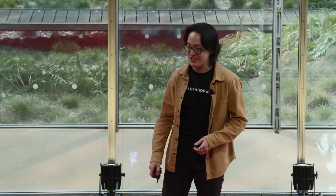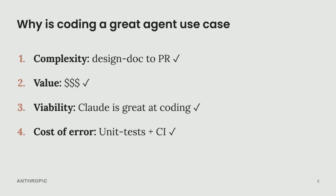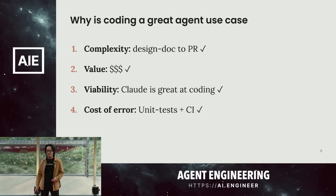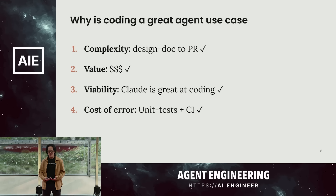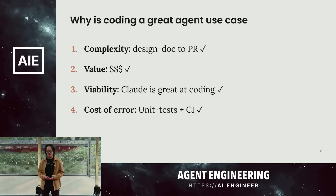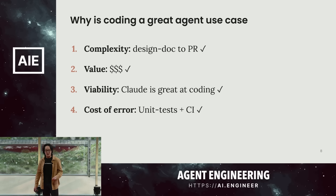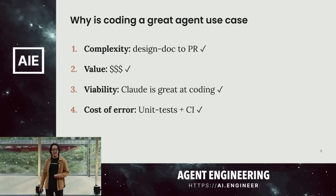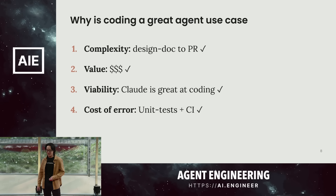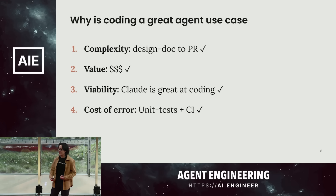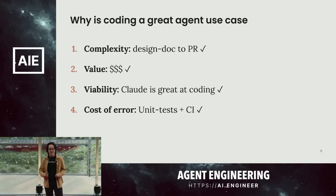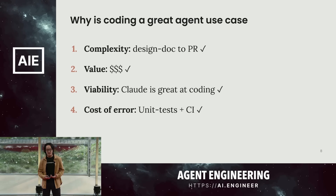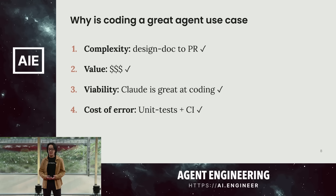Let's see this checklist in action. Why is coding a great agent use case? First, to go from design doc to a PR is obviously a very ambiguous and very complex task. Second, a lot of us are developers here, so we know that good code has a lot of value. Third, many of us already use Claude for coding, so we know that it's great at many parts of the coding workflow. And last, coding has this really nice property where the output is easily verifiable through unit tests and CI. That's probably why we're seeing so many creative and successful coding agents right now.